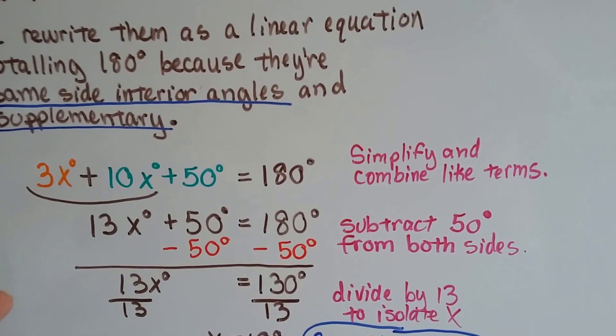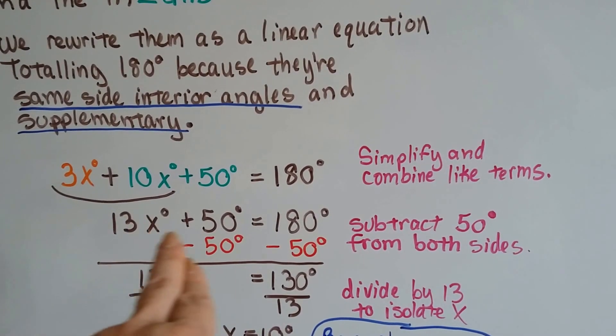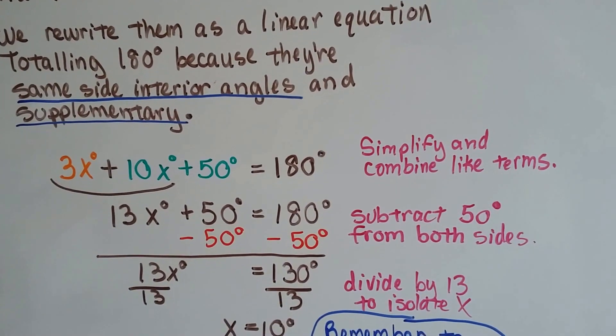All we have to do is combine the like terms. 3x and 10x makes 13x. Now we add that with the 50 degrees, and it's going to equal 180 degrees.